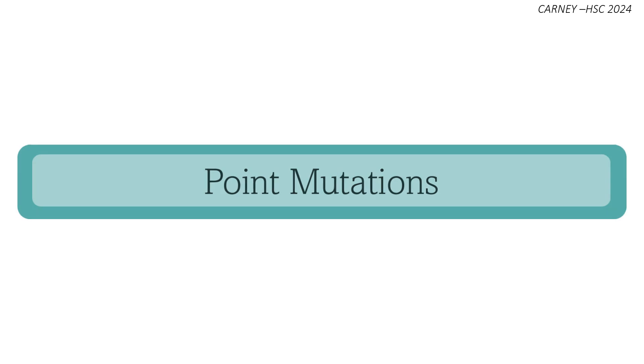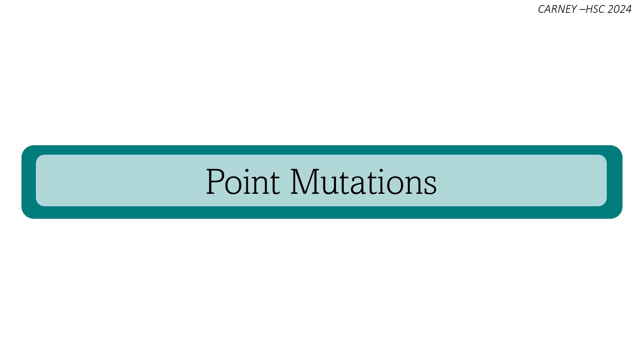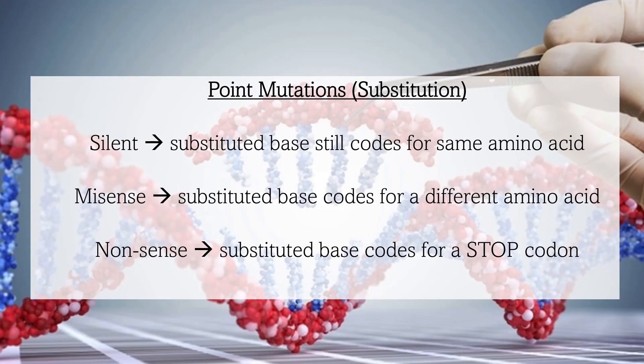Point mutations are changes in a single nucleotide base pair in the DNA sequence. These mutations can have various effects on the genetic code and can be classified into different types based on their impact. Point mutations are often referred to as substitution mutations. A silent mutation is when the substitution of a base pair results in the same amino acid being coded for, and therefore does not affect the formation of a protein.